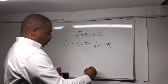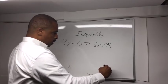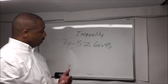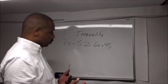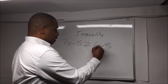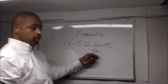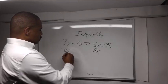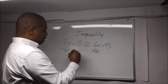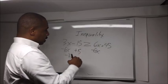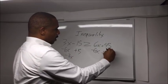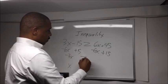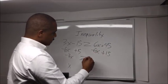The first thing we're going to do is the opposite. If you know my system, you just do the opposite. So 6x, the opposite is minus 6x, and if you do it to this side, you have to do it to this side. That's going to give us minus 3x. Then the opposite of minus 15 is plus 15, and we do it to this side, we have to do it to this side. That gives us greater than or equal to 45 plus 15, which is 60.